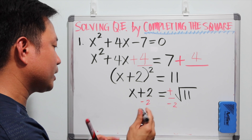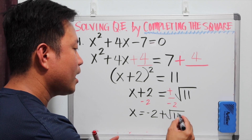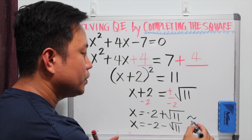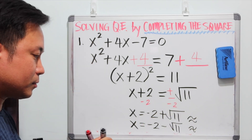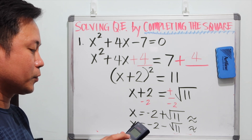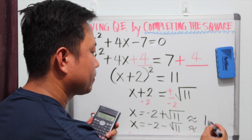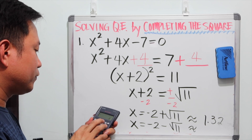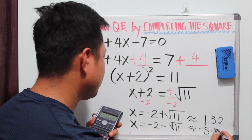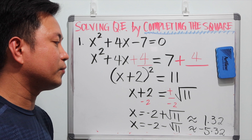The two values of x are x is equal to negative 2 plus root 11, and x is equal to negative 2 minus root 11. Using your calculator, you can round off this answer to two decimal places. Negative 2 plus root 11 gives us approximately 1.32, and negative 2 minus root 11 gives us negative 5.32. So the zeros of this quadratic equation are 1.32 and negative 5.32.